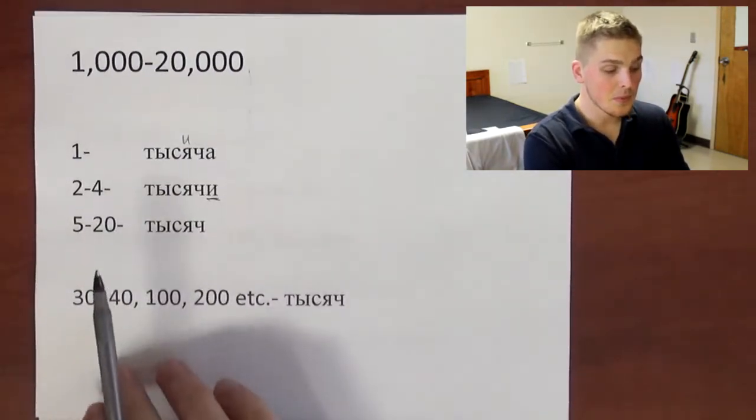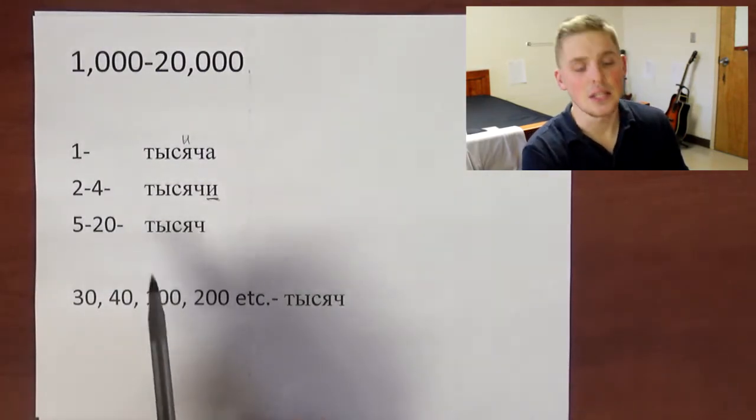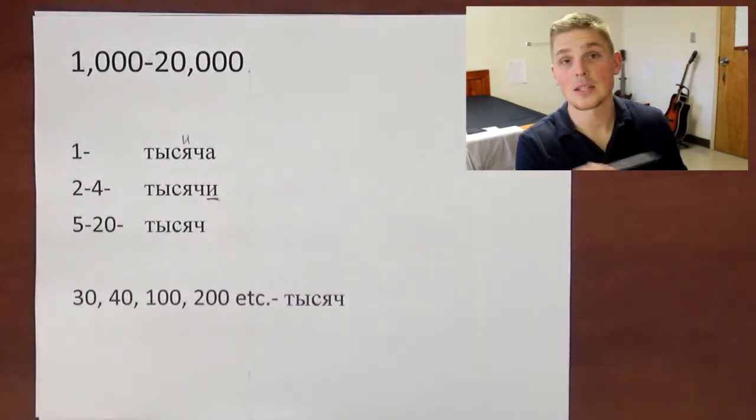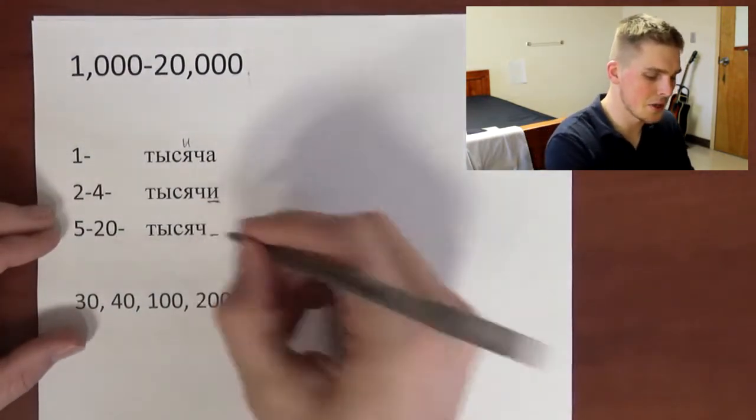And then for numbers five to twenty, it's going to be тысяч. We can see that the ending changes.